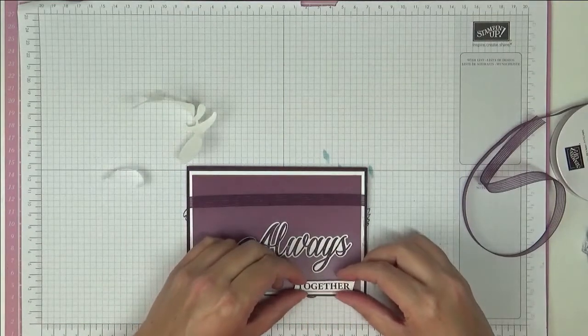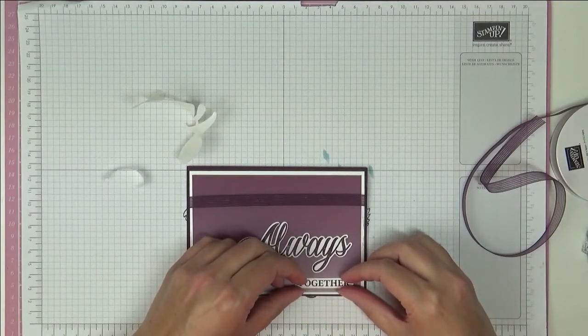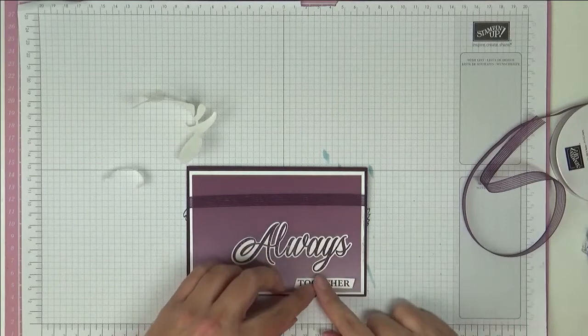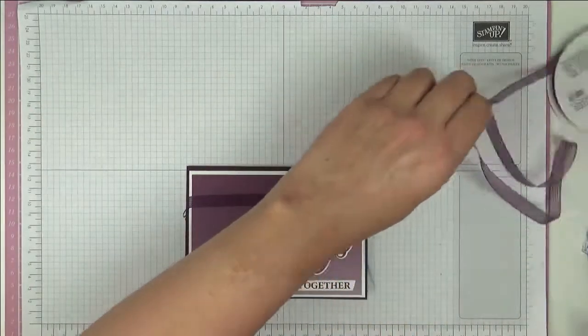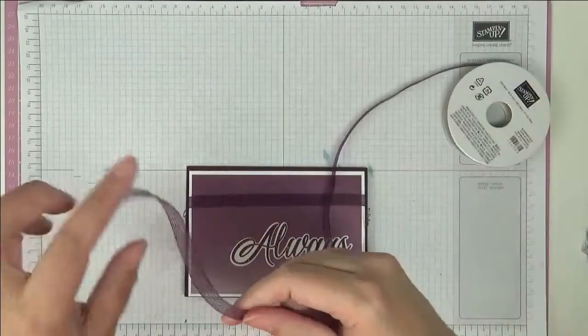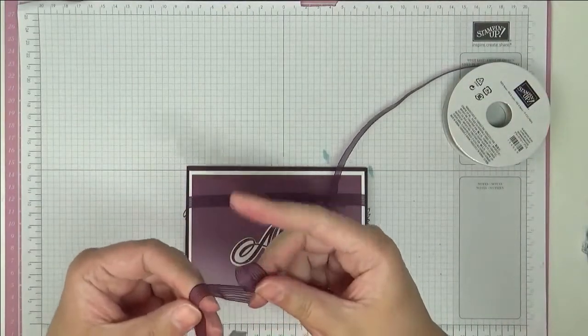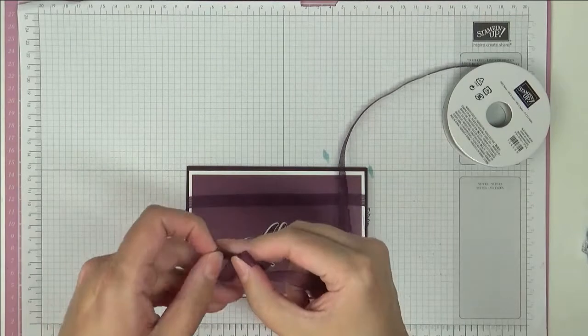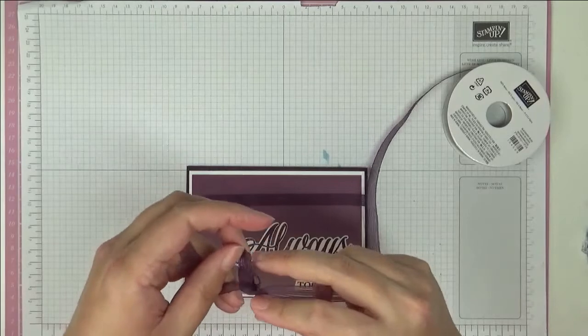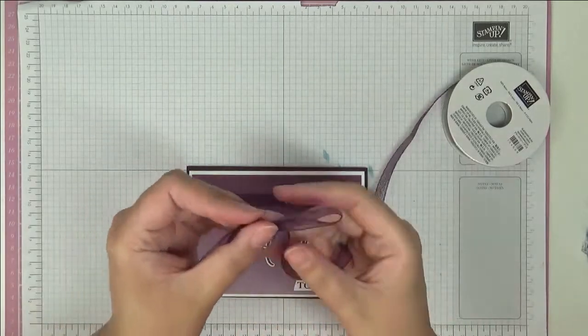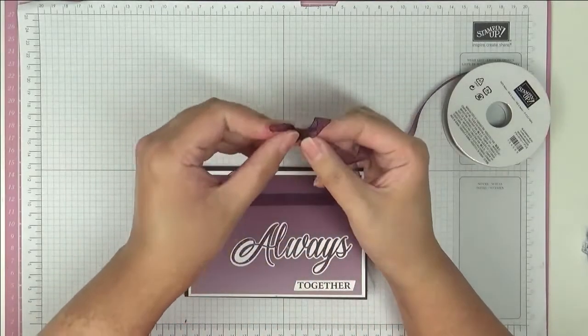Get rid of that. Then same Blackberry Bliss ribbon, we're going to attempt to tie a bow and see how well we can do.